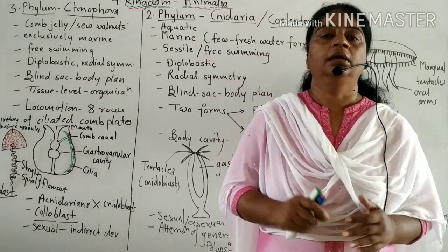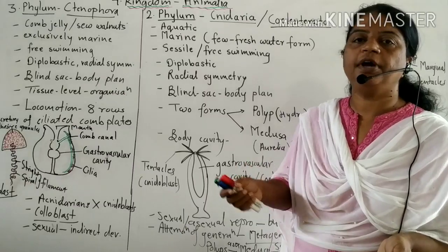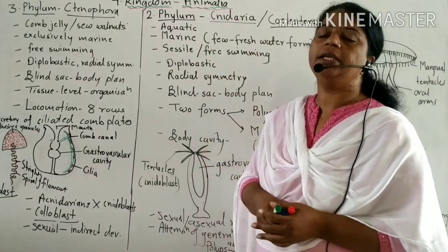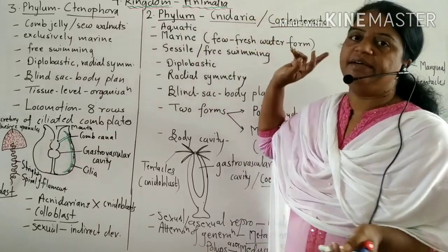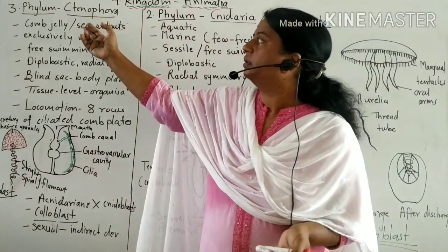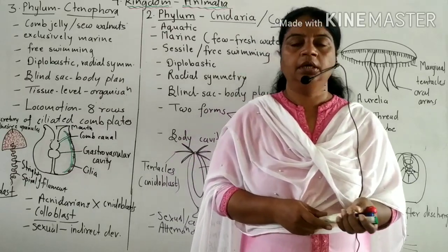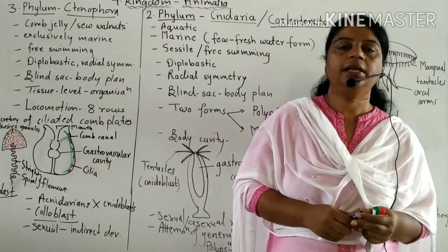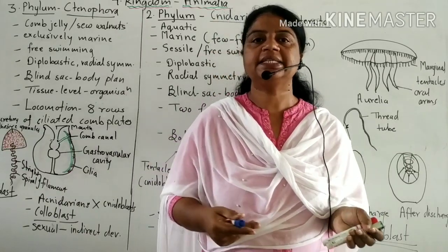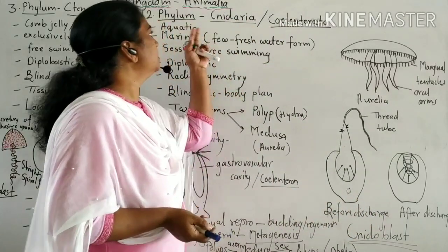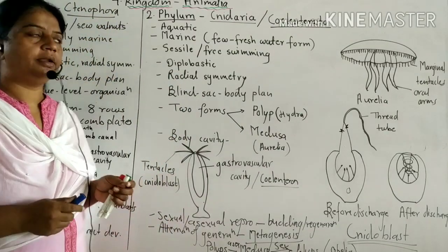Hello students. Here we will see the next phylum of kingdom Animalia — the second phylum is Cnidaria, also called Coelenterata. In the last lecture, we saw phylum Porifera; here we will see the next phylum, Cnidaria or Coelenterata.